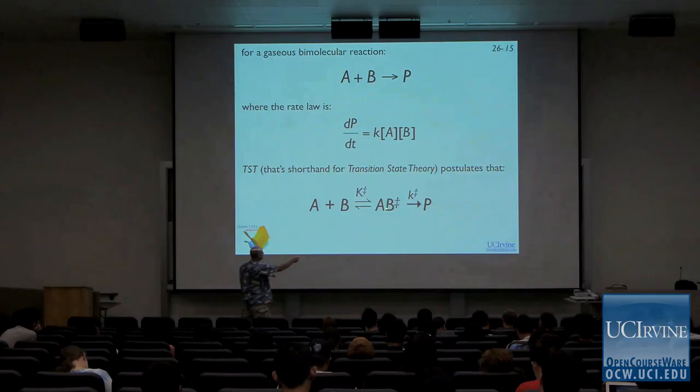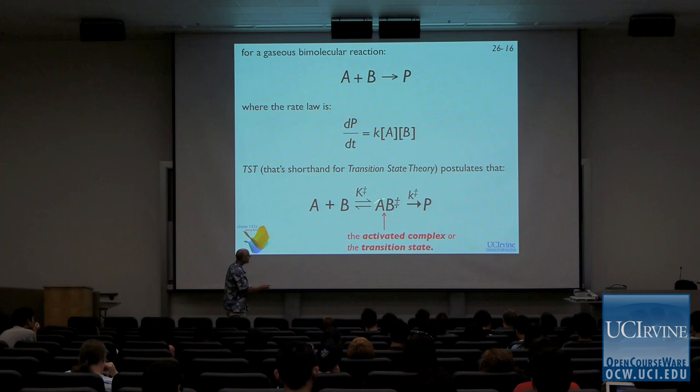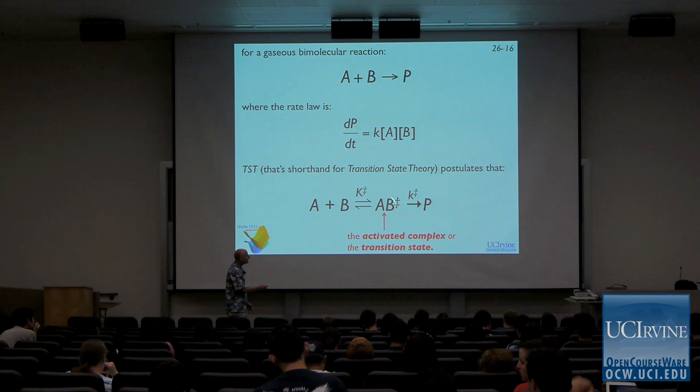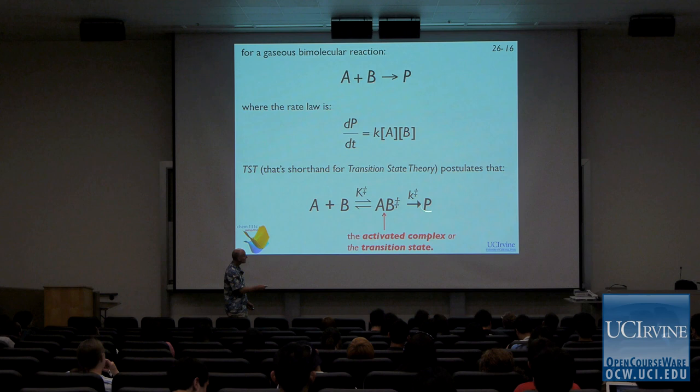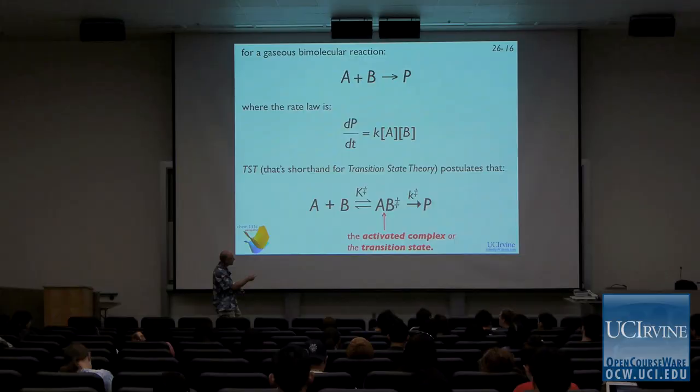Transition state theory basically takes all of the reactants, puts them on one side, all of the products on the other side, and in between it constructs something called an activated complex or a transition state — that's why it's called transition state theory. This transition state is an entity that is intermediate between the reactants and the products. If bonds exist in the products that don't exist in the reactants, they exist partially in a weak form in the activated complex. If bonds are broken, they're partially broken in the transition state.